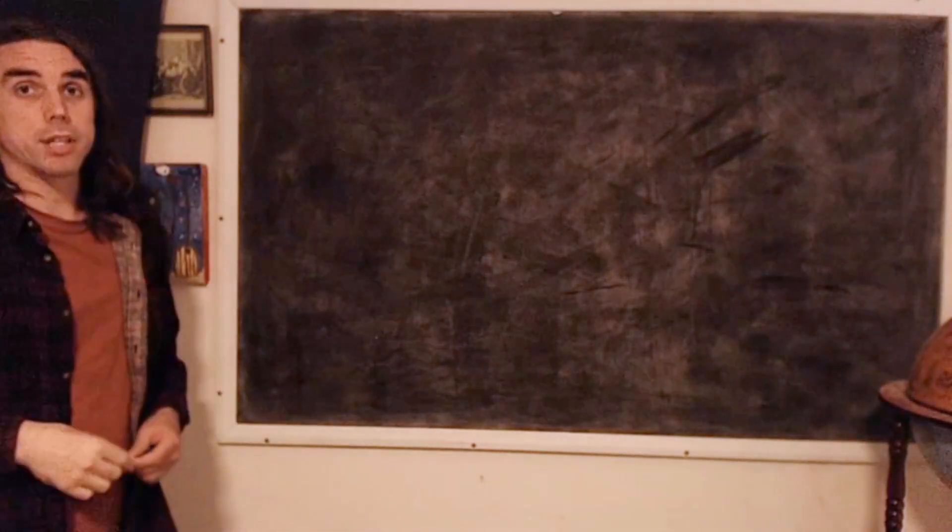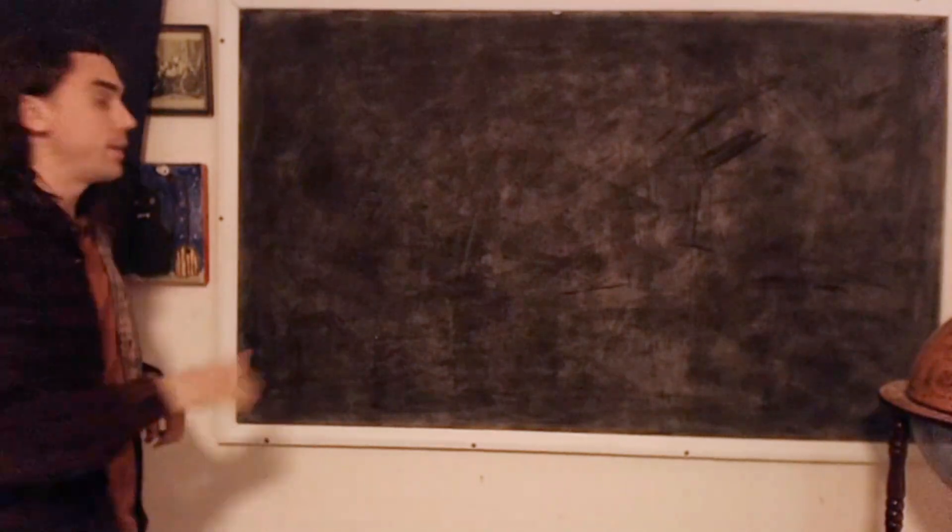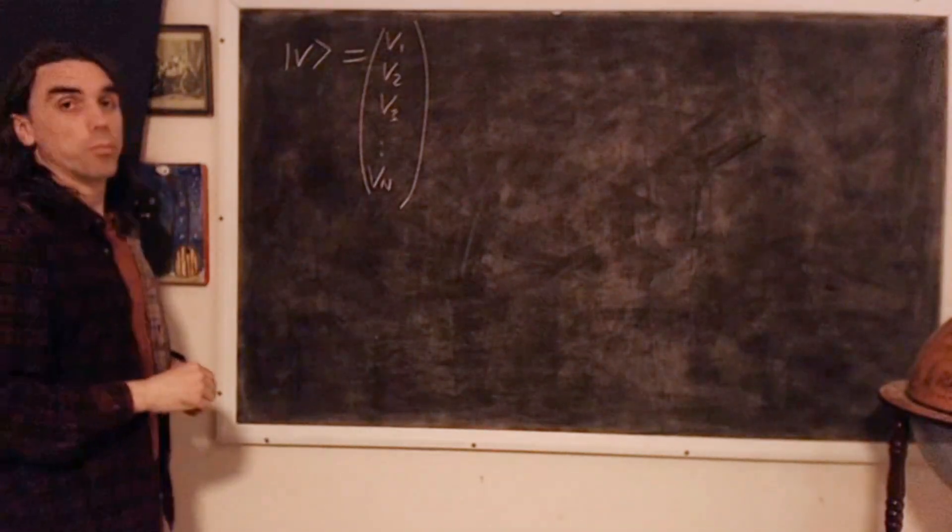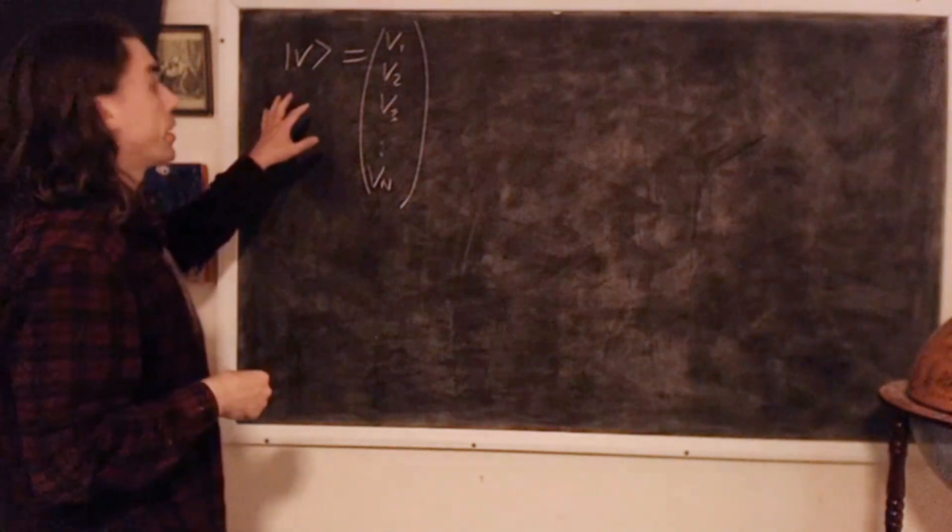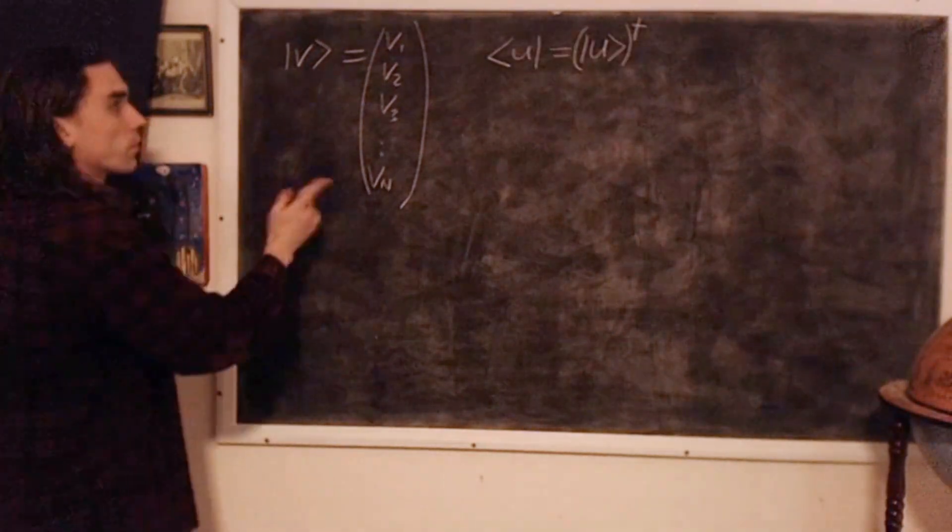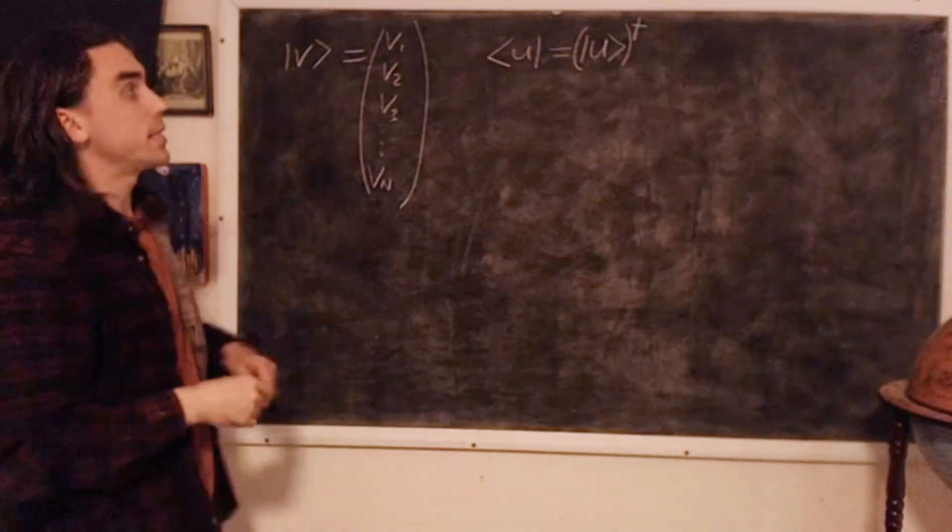So we have the ket, or the vector, v. The bra, the Hermitian conjugate of v. And let's define a bra u. Which, written out component-wise, is as follows.